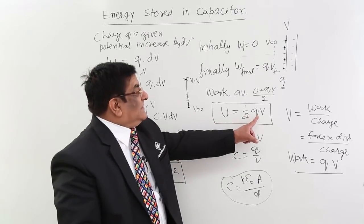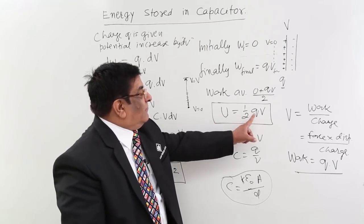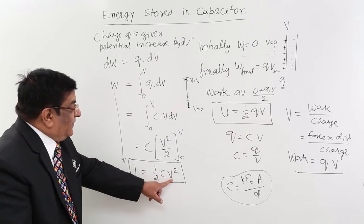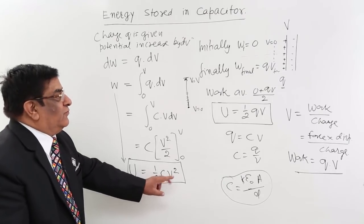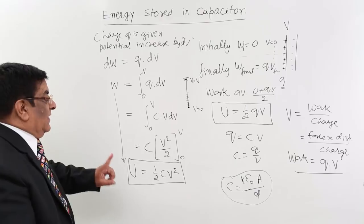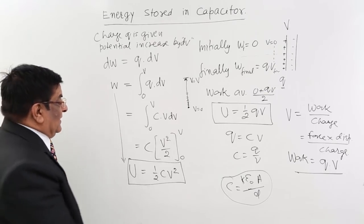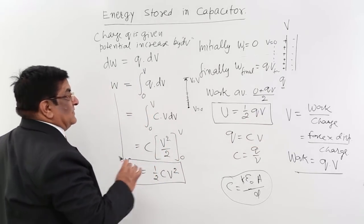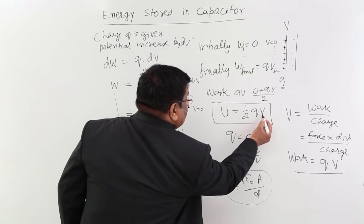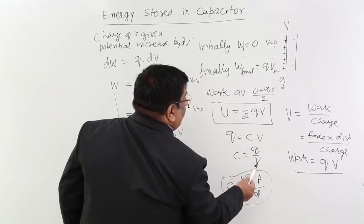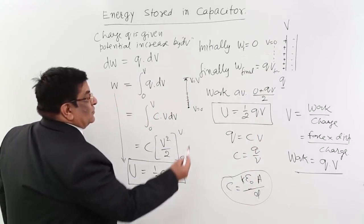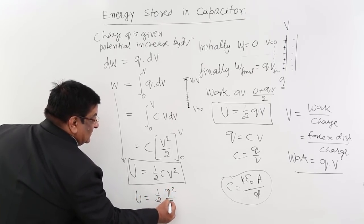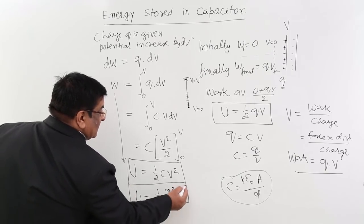And Q is equal to what? C into V. Put it here. What it will be? Half CV square. Here 1C and 1V make it Q, so that will be Q into V. So both are same formulas. We can even convert it into a third formula. This is C into V, this is Q into V, and 1V can have Q and C. How? This V equals Q upon C. Put Q upon C here. So this will be U equals half Q square upon C. This is the third formula.